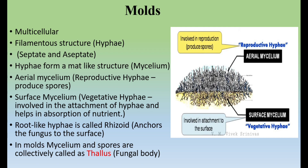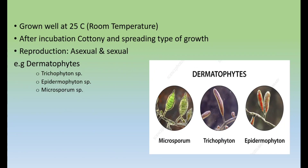There are also root-like hyphae known as rhizoids, which help anchor the fungi to the surface. In molds, the collective structure of mycelium is known as thallus, or the fungal body. Molds grow well at 25 degrees Celsius, which is room temperature. In dimorphic fungi, the mold form is present at room temperature in the environment, while the yeast form is present in living human tissues at 37 degrees Celsius. After incubation, mold colonies are cottony and show spreading-type growth. Molds are reproduced by both asexual and sexual methods. Examples of molds are the dermatophytes, which include three species: Trichophyton, Epidermophyton, and Microsporum.